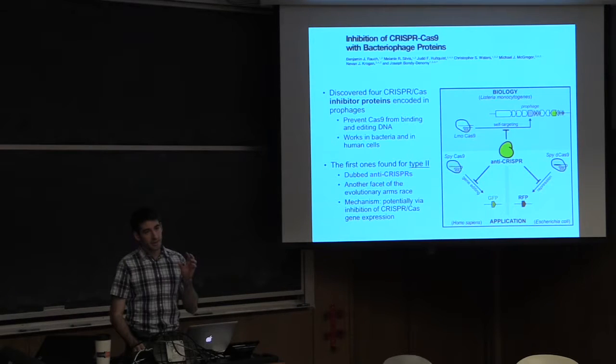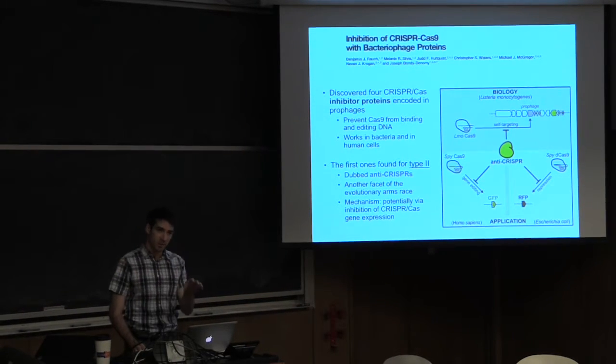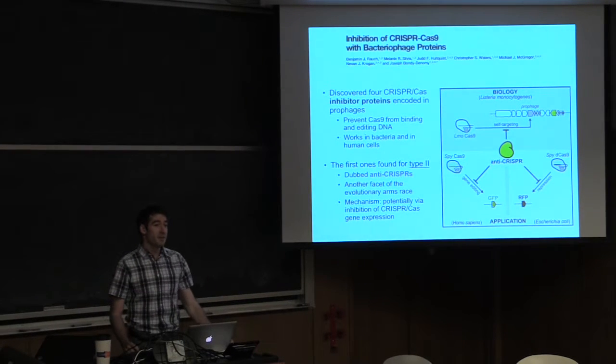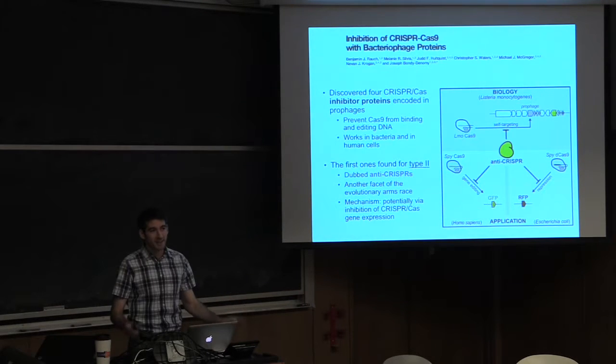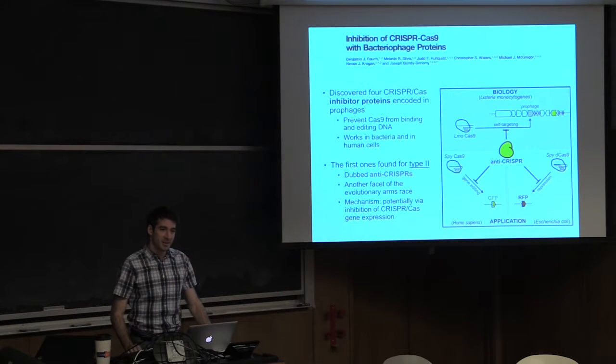And so it's kind of crazy when you think about this evolutionary arms race, because it was the phages that are trying to attack the bacteria, and the bacteria that came up with CRISPR, and then the phages that said, aha, anti-CRISPR. So maybe there's an anti-anti-CRISPR waiting to be discovered out there. If anyone's into bioinformatics, you should start mining genomes right now, and get the next big thing.